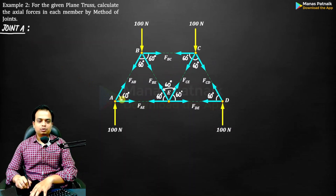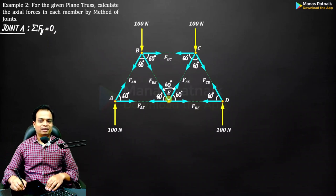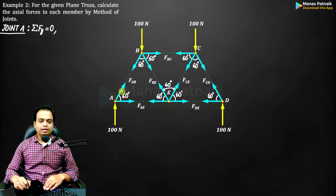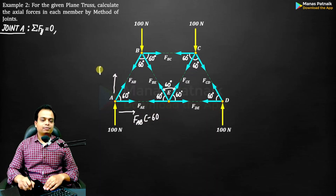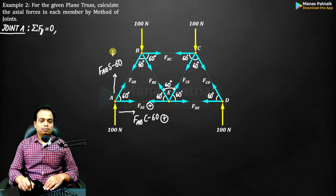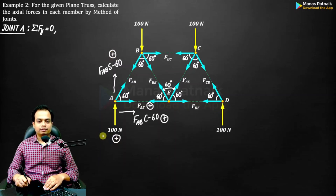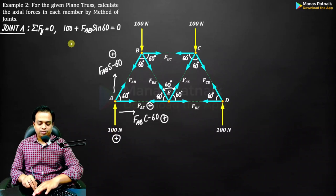At joint A, let's go for FX = 0 and FY = 0. You have FAE and FAB's cosine component along X, and FAB's sine component along Y. FAB·cos 60 and FAB·sin 60 are both towards the right and upward respectively. Applying summation FY = 0: FAB·sin 60 + 100 = 0. On solving this equation, you get the value of FAB.